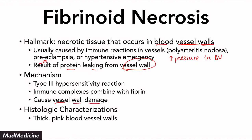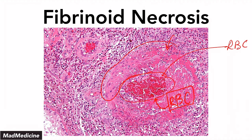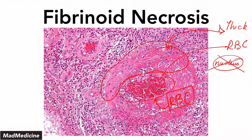When it comes to the mechanism, fibrinoid necrosis is a type of type 3 hypersensitivity reaction where immune complexes bind with fibrin and cause vessel wall damage to occur. The histologic characterizations you're going to see are thick pink vessels — thick because of the deposition of fibrin damaging the cell walls — and proteins being released. You can see the blood vessel with your red blood cells, and an area of the vessel wall that is very thick. If you zoom in and look at the cells, you're not going to see nuclei, which tips you off that a necrotic mechanism is happening.